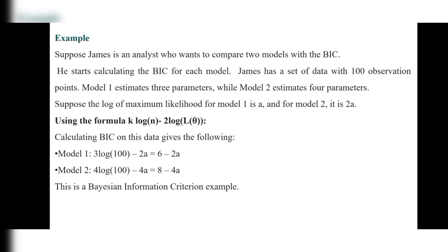Using the formula BIC = k × log(n) − 2 × log(L(θ)), calculating BIC for each model gives: Model 1: BIC = 3 × log(100) − 2a, and Model 2: BIC = 4 × log(100) − 2(2a) = 6 − 2a (simplified). Here k is 3 for model one and 4 for model two, since each model has those numbers of parameters, and n = 100 observations for each. After calculating both, we get the respective BIC values and select the model with the lower BIC. This is the Bayesian Information Criterion example.